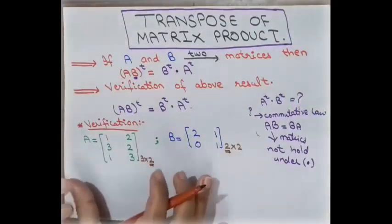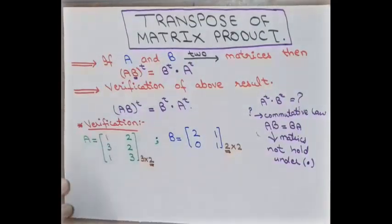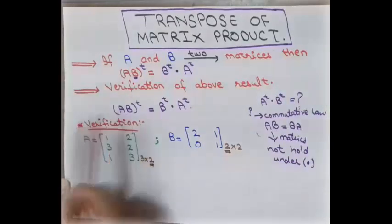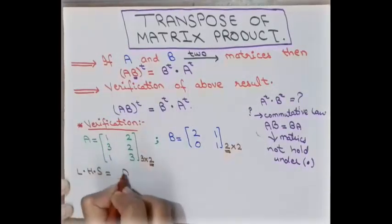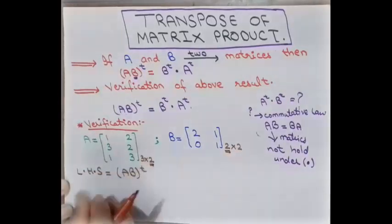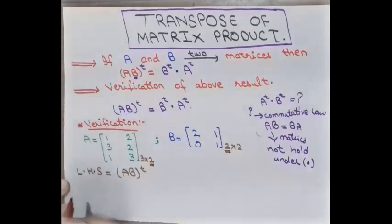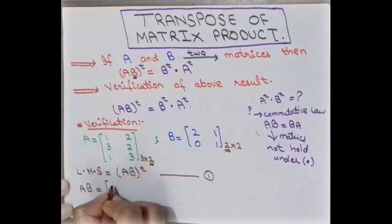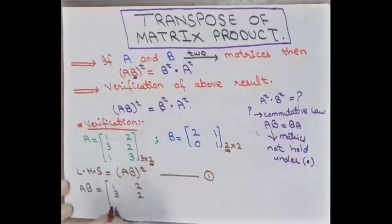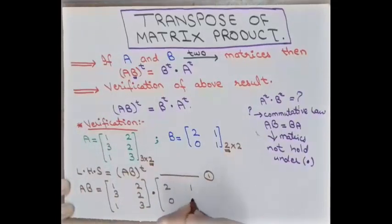We have already discussed the multiplication of two matrices and their conditions — the link is in the description box. To verify the property, the left-hand side must equal the right-hand side. The left-hand side is (AB)ᵀ, which means we first multiply the two matrices and then apply the transpose. Matrix A is [[1,2],[3,2],[1,3]] multiplied by matrix B which is [[2,1],[0,1]].